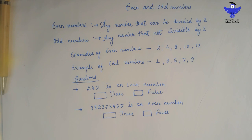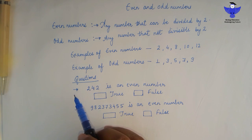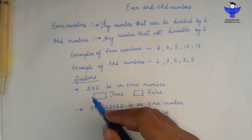Let us take some questions. Question number 1: 242 is an even number. If you divide 242 by 2, 2 ones are 2, 2 twos are 4, 2 ones are 2. The remainder is 0. Hence, it is an even number. So the answer is true.